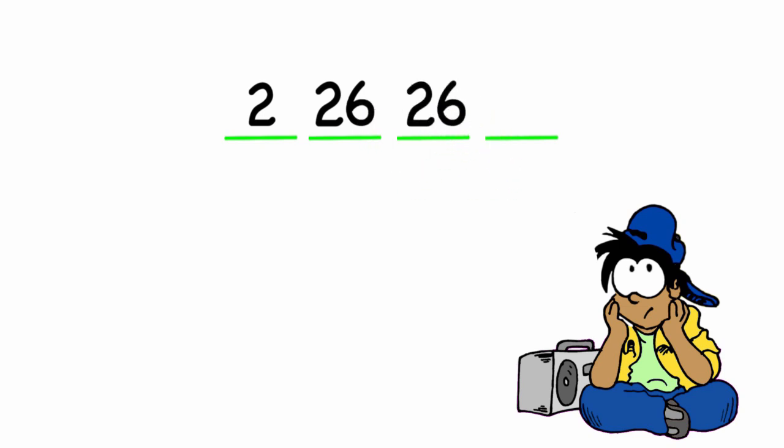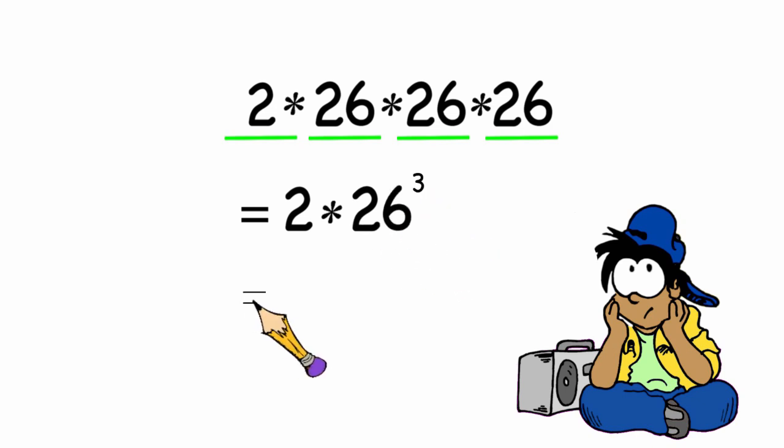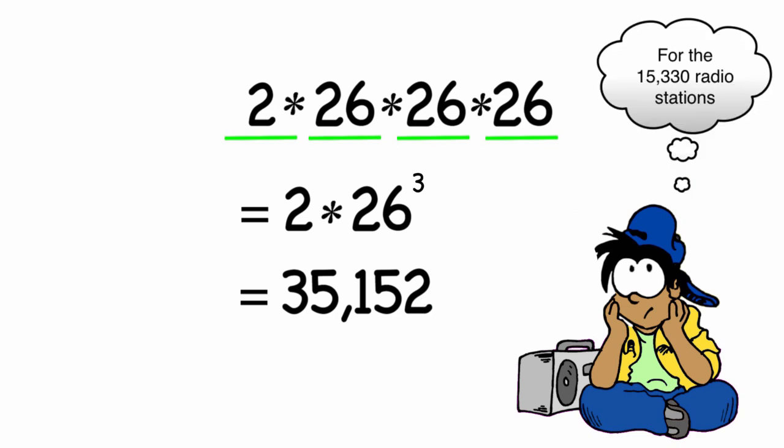There are also 26 options for the third letter and 26 options for the fourth letter. By using my counting principle, I can say that answer is 2 times 26 to the third power or 35,152 possible combinations.